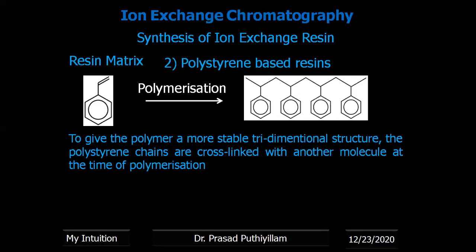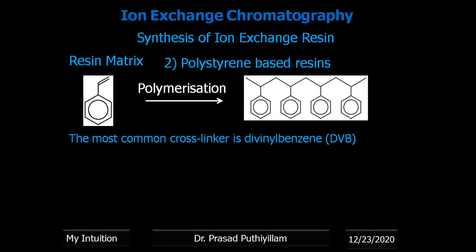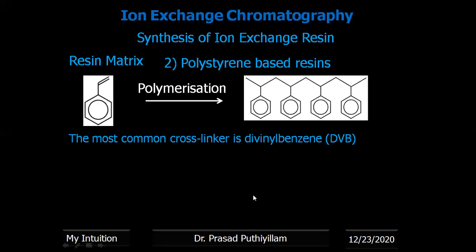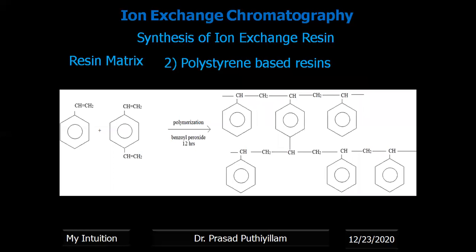The linear polymer must be converted into a cross-linked, three-dimensional structure. To do cross-linking, another molecule — divinyl benzene — is added before polymerization. Divinyl benzene has two double bonds, so the reaction can continue in one direction and also in another direction, giving a three-dimensional structural formation. The styrene monomer and divinyl benzene monomer undergo copolymerization with benzoyl peroxide for about 12 hours to yield a three-dimensional, highly cross-linked structure.